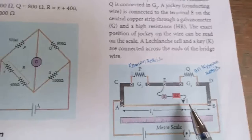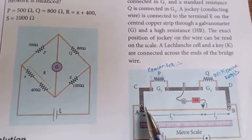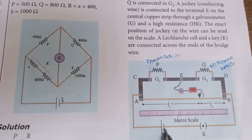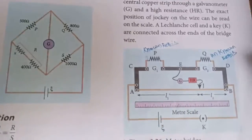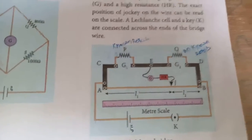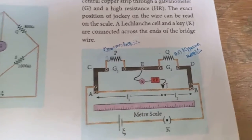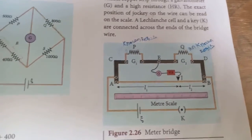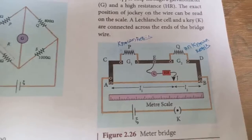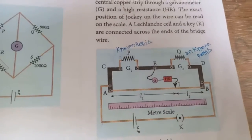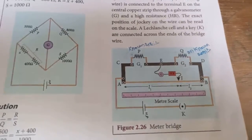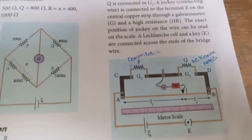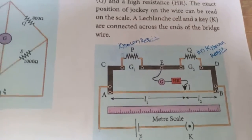The circuit has a power supply connected with a battery and key. The main concept and function of the meter bridge experiment is to find out the value of an unknown resistor resistance.